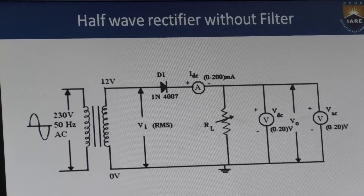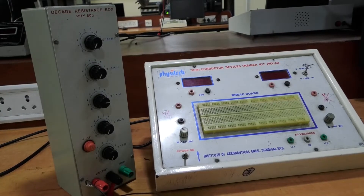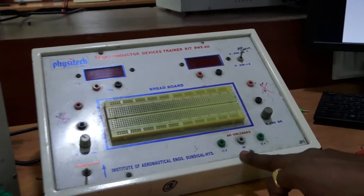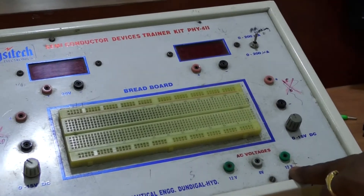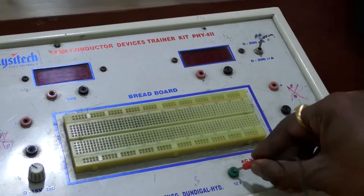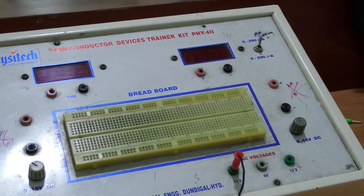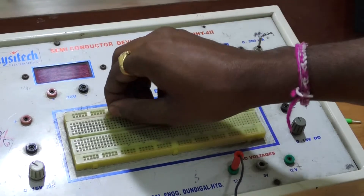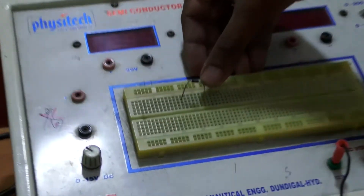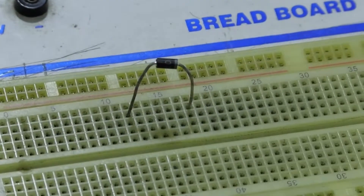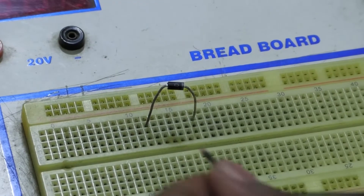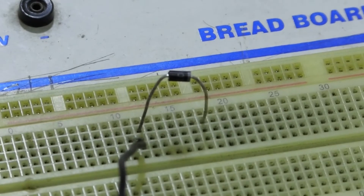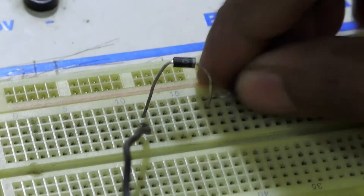Now we are going to connect the circuit diagram as per the given circuit diagram. We need to take from the secondary winding of the transformer. If you observe the semiconductor trainer kit at the bottom side, this is the secondary winding of the transformer. We need to take from this 12 volts. This 12 volts is connected to the diode anode. First I am going to place the diode — this is the anode terminal and this is the cathode terminal. The wire strip line is the cathode terminal and this is the anode terminal. From this secondary winding of the transformer, 12 volts is connected to the anode of the diode. The cathode of the diode is connected to ammeter positive.